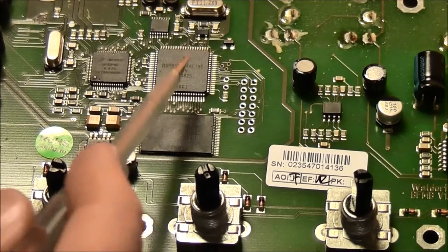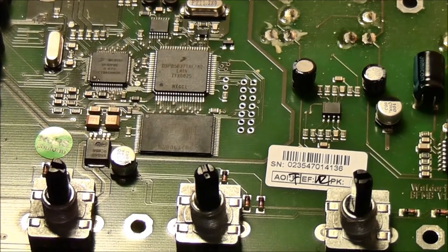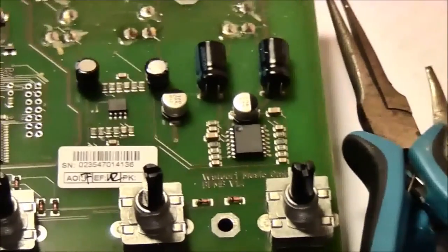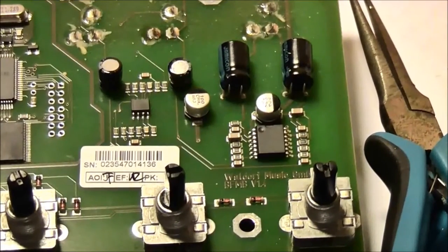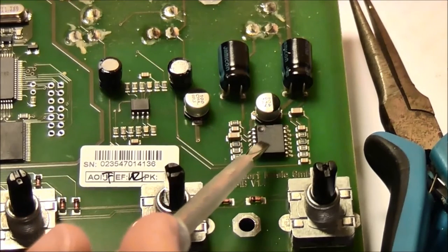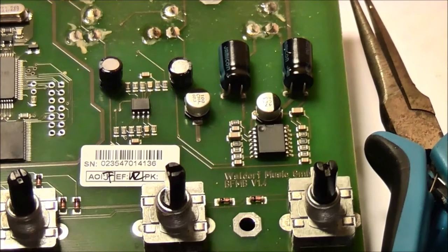Then you have the line-out amplifier on the left side and here on the right side the headphone amplifier.